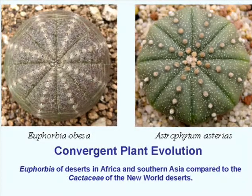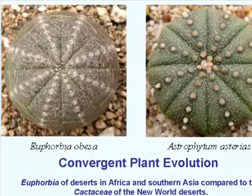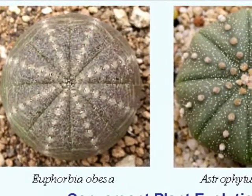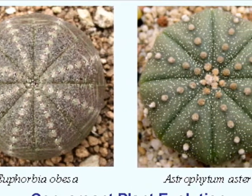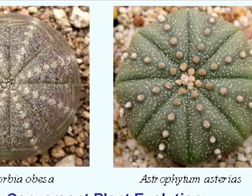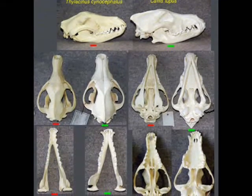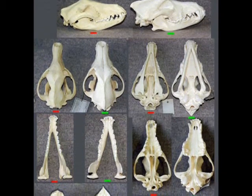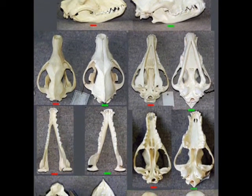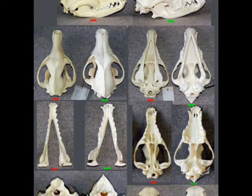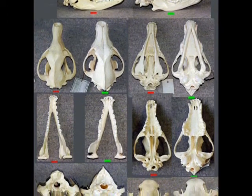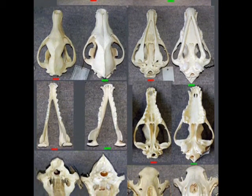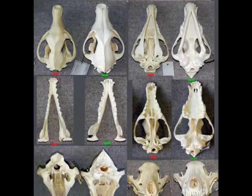In our first example, we see that the euphorbia of Africa and Southern Asia and the cactacea of the Americas evolved independently, but converged to forms so similar that you would think that they were closely related — they are not. In our second example, we compare the Tasmanian marsupial wolf to the canid wolf that we're familiar with. If you look closely, you'll see that the skull forms are almost identical, even though the lines that they come from split in the Cretaceous over 125 million years ago. These are just two of the many examples of convergent evolution, proving the existence of objective target forms.